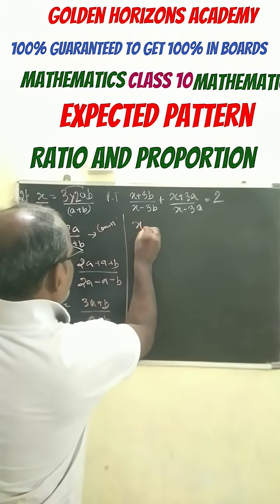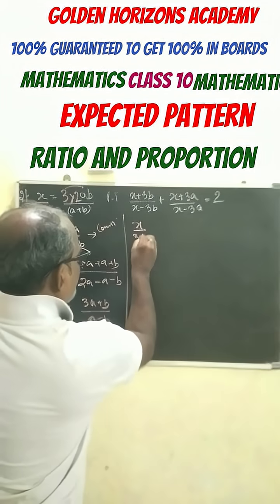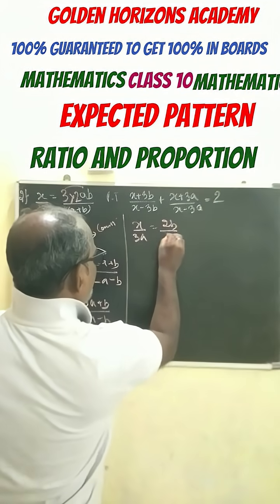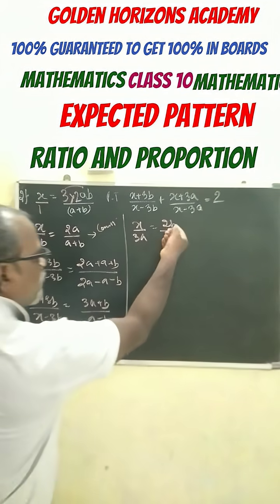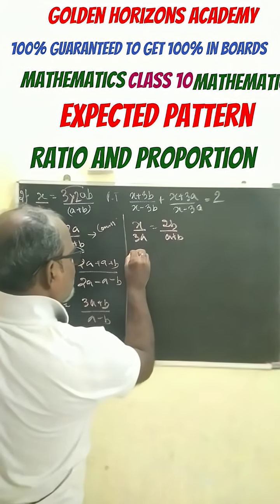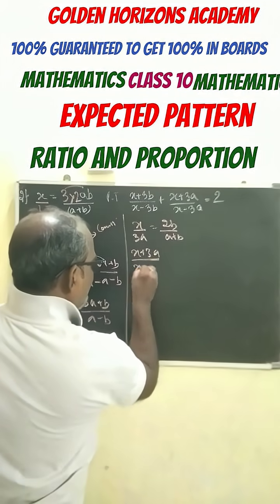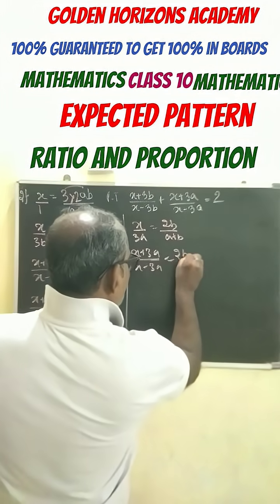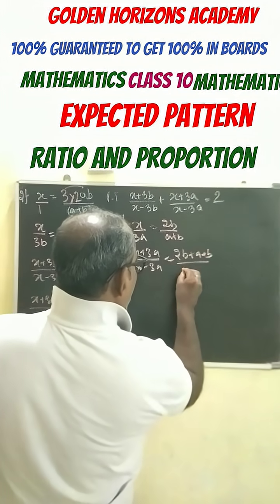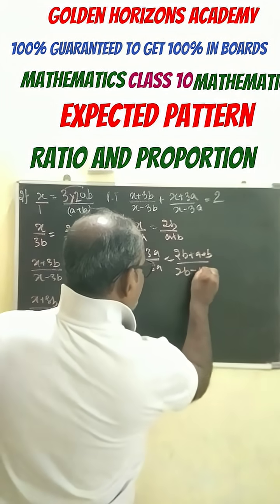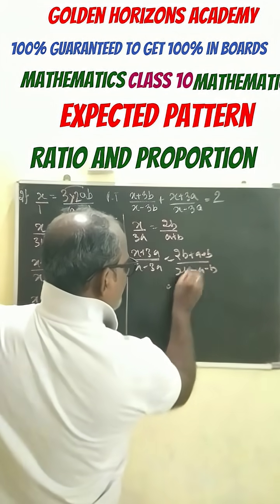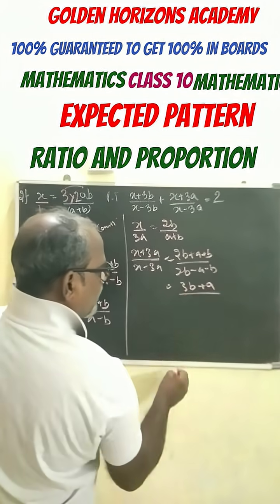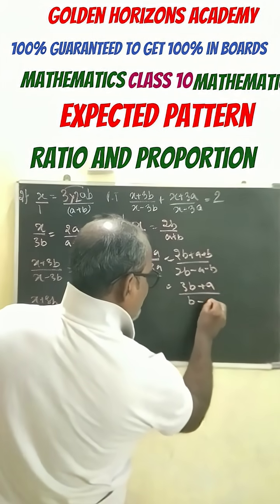we can go with x plus 3a by x minus 3a equals 2b plus a plus b by 2b minus a minus b, which is supposed to 3b plus a by 3b minus a.